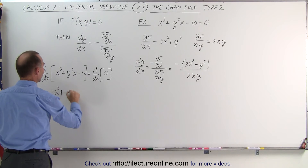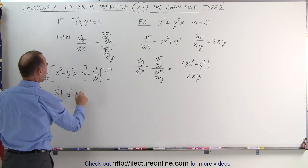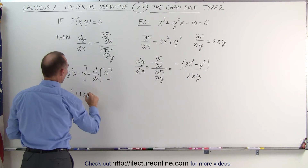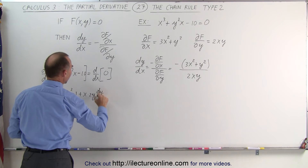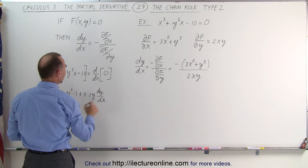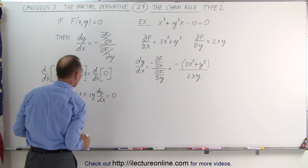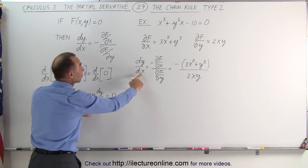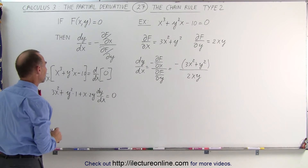Using the product rule: we take the first times the derivative of the second, which is 1, plus the second times the derivative of the first, which is 2y times dy/dx. The derivative of the constant term is zero, and that equals the derivative of the right side, which is also zero.